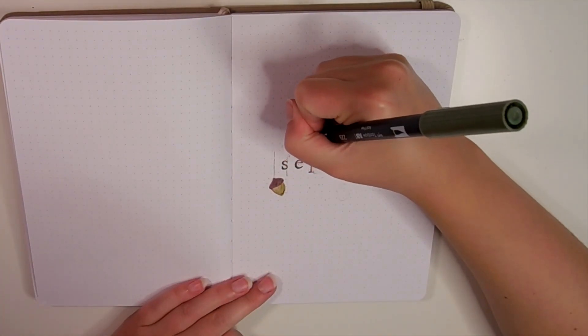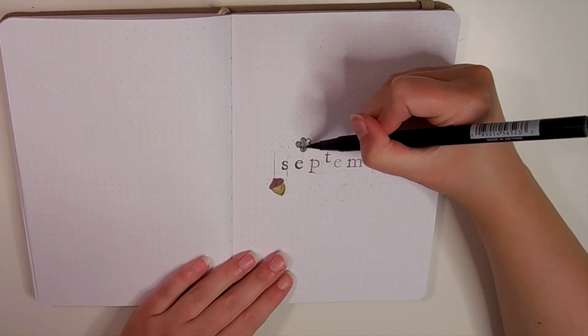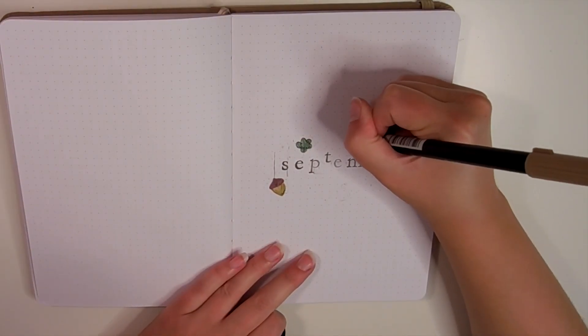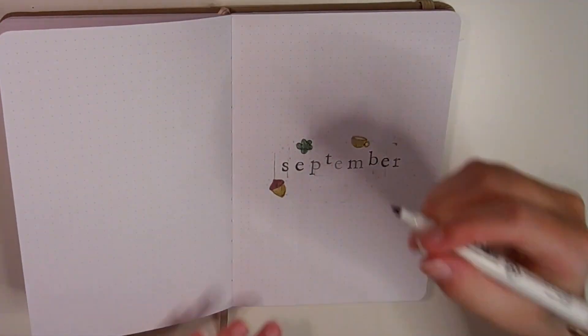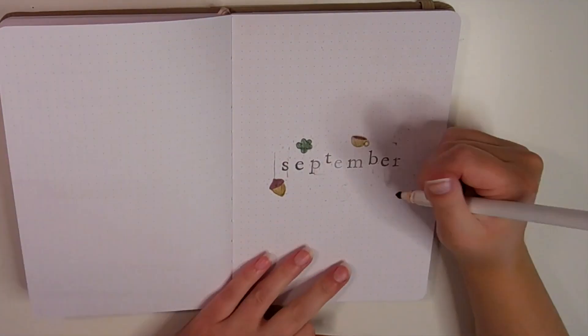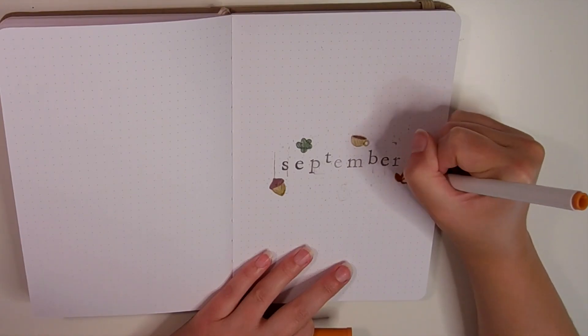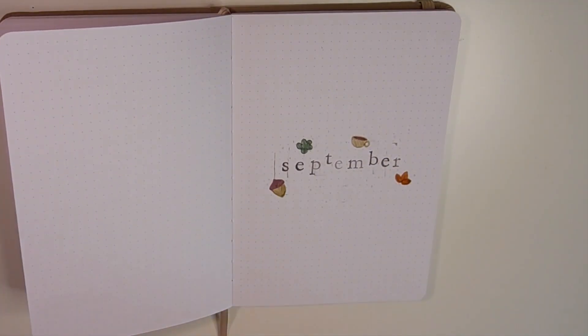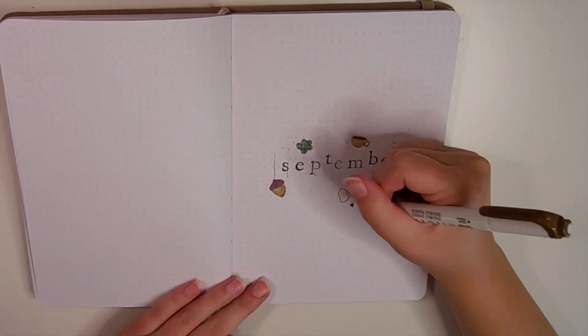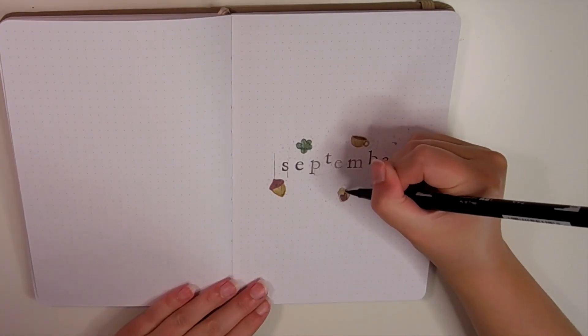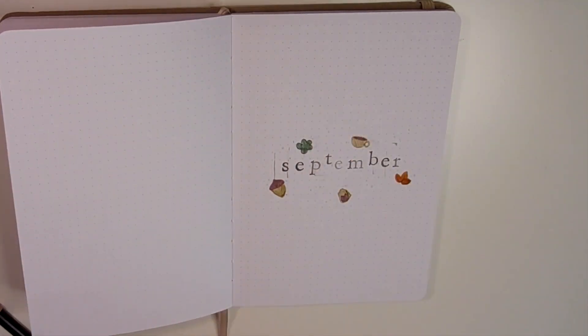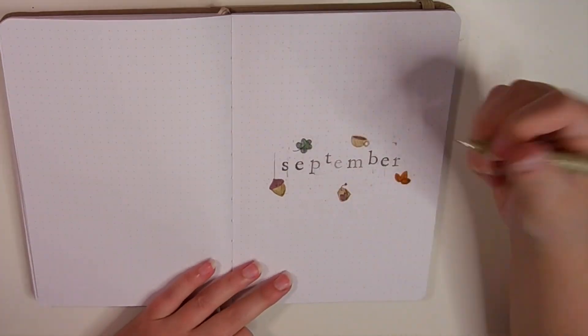We're doing a very simple fall theme. I got inspired by Riley Autumn—I'll have her YouTube channel and Instagram post linked below. I wanted to keep this month's theme pretty simple but very fall, so I'm using some stamps for the lettering throughout all the spreads this month.